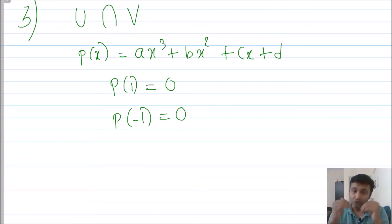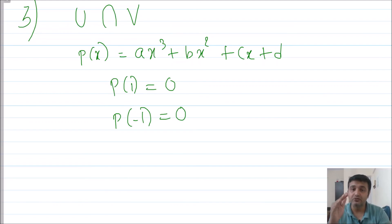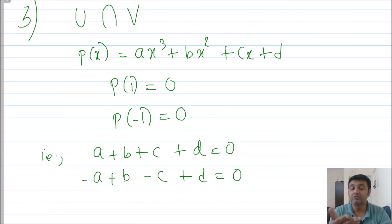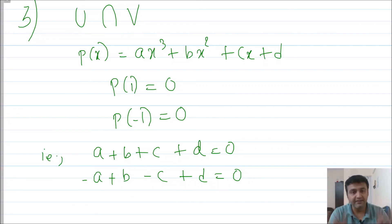From here you can observe that U∩V is a subspace of both U and V, so it should have smaller dimension. U∩V consists of polynomials satisfying both conditions: p(1) = 0 and p(−1) = 0. Substituting both gives two equations: a + b + c + d = 0 and −a + b − c + d = 0.